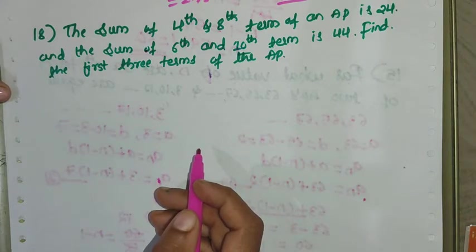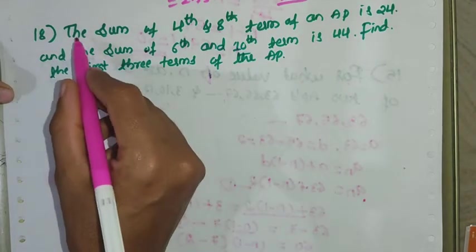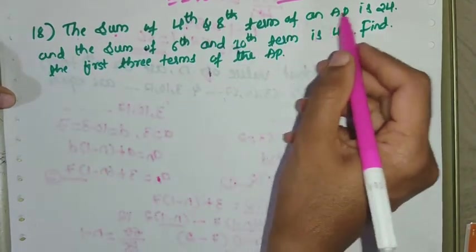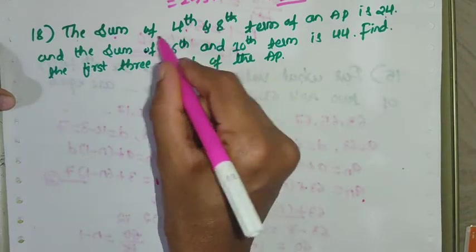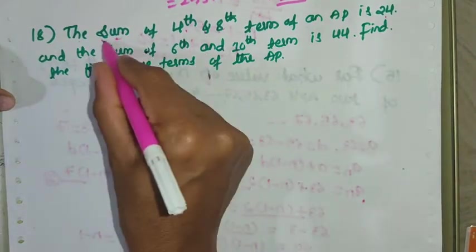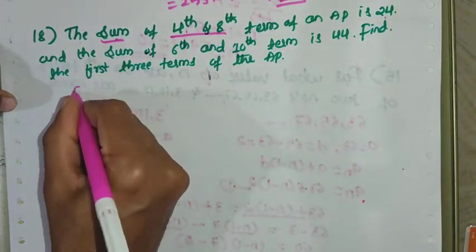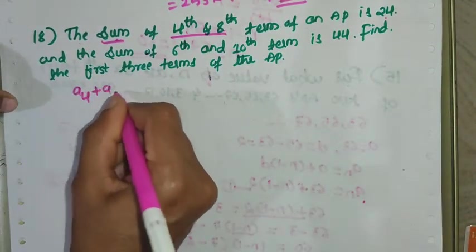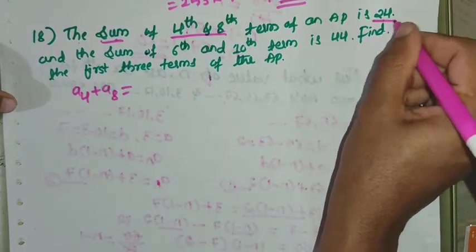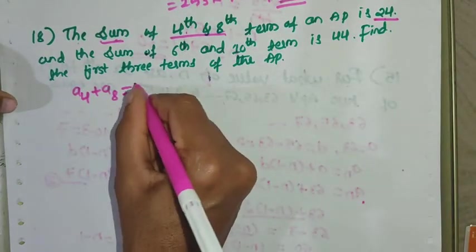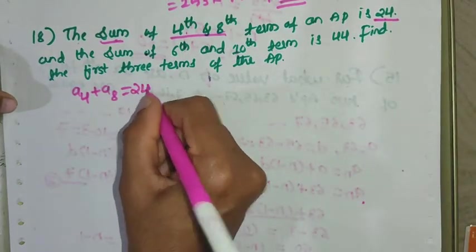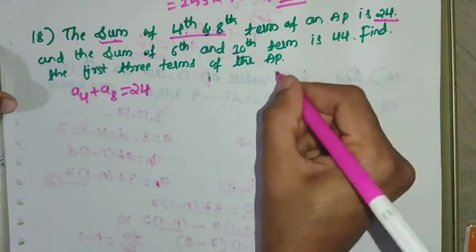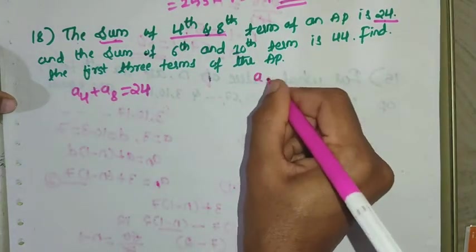18th question. The sum of the 4th and 8th terms of an AP is 24. That is a_4 + a_8 = 24. And the sum of the 6th and 10th terms is 44.